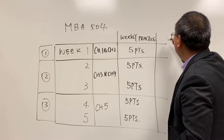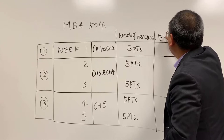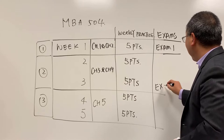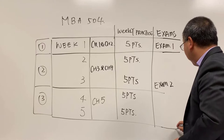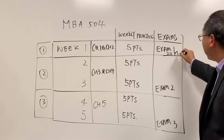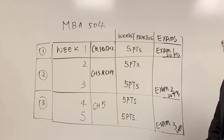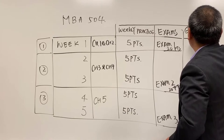In each module we will have exams. At the end of week one we will have exam number one. At the end of week three we will have exam number two. At the end of week five we will have exam number three. Each exam covers 20 points. So by far we have 85 points already. To make up the remaining 15, we will do a group project — I call it a group critical thinking essay.